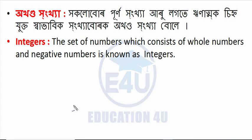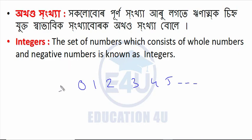The set of numbers which consists of whole numbers and negative numbers is known as integers. The integers include numbers like ..., minus 4, minus 3, minus 2, minus 1, 0, 1, 2, 3, 4, 5, 6 and so on.